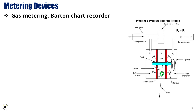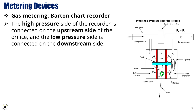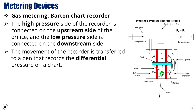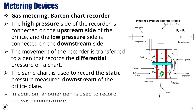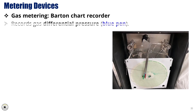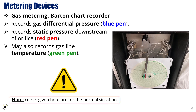To record the differential pressure, a measuring instrument called a Differential Pressure Recorder or Barton Chart Recorder is used. The high-pressure side of the recorder is connected on the upstream side of the orifice, and the low-pressure side is connected on the downstream side. The movement of the recorder is transferred to a pen that records the differential pressure on a chart. The same chart is used to record the static pressure measured downstream of the orifice plate. Another pen records the gas temperature. The Barton Chart Recorder records gas differential pressure with the blue pen, static pressure downstream of the orifice with the red pen, and may also record gas line temperature with the green pen. Colors given here are for the normal situation — make sure to check your rig-up for any changes.